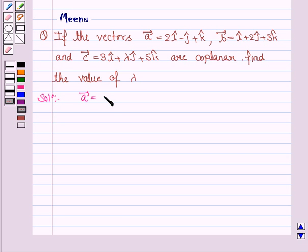Vector A is 2i cap minus j cap plus k cap. Vector B is i cap plus 2j cap plus 3k cap. Vector C is 3i cap plus lambda j cap plus 5k cap.